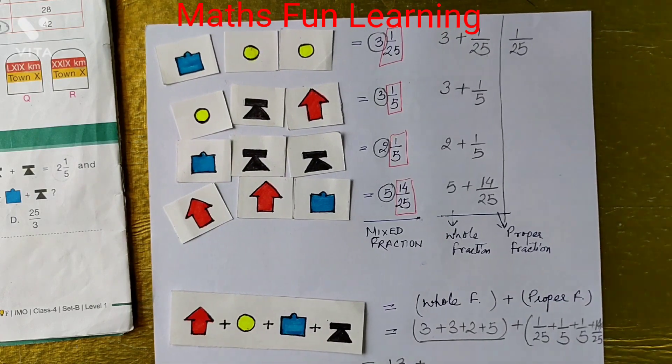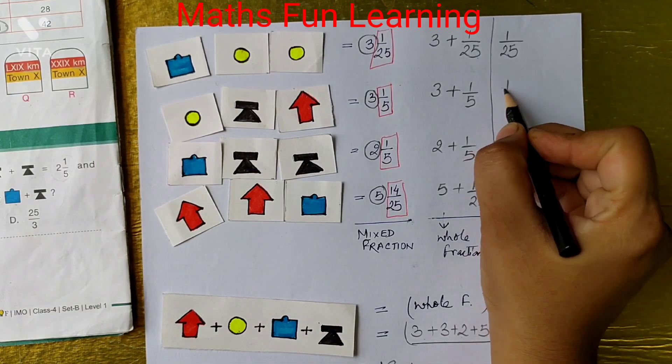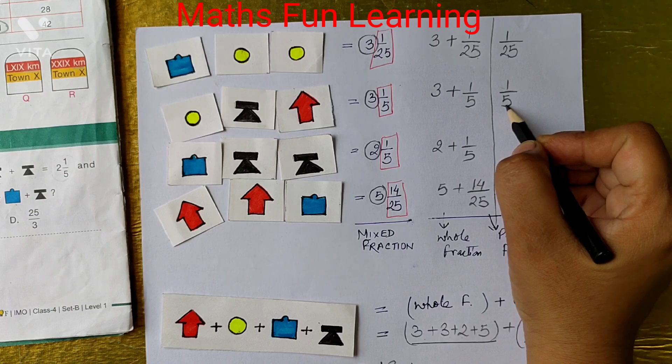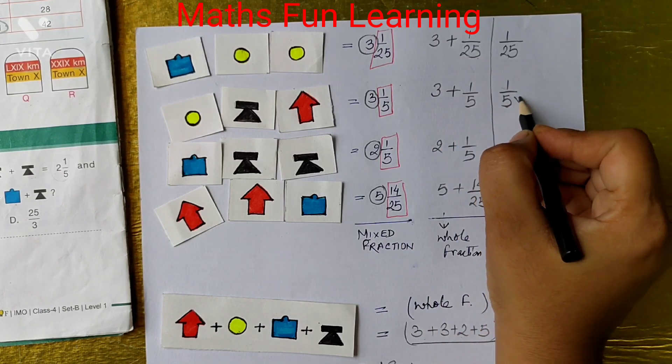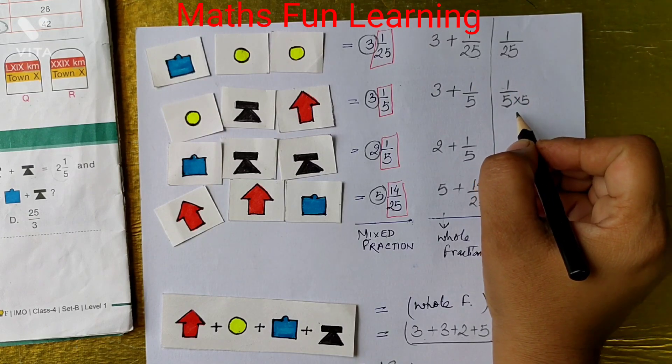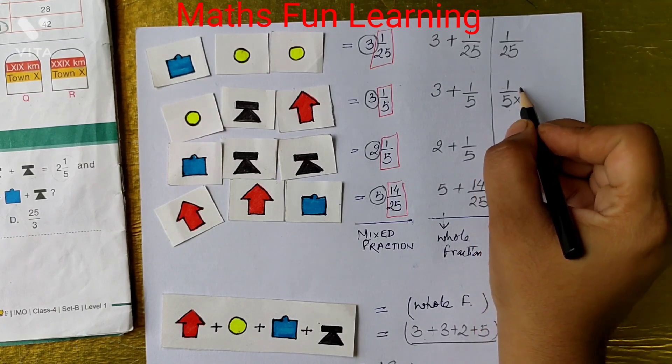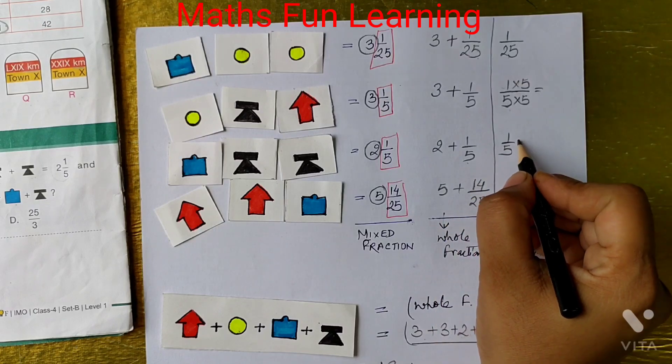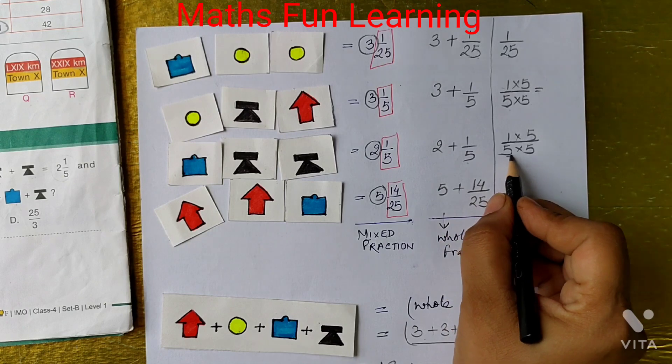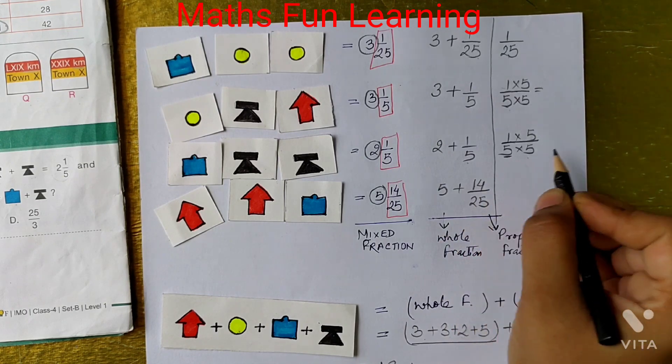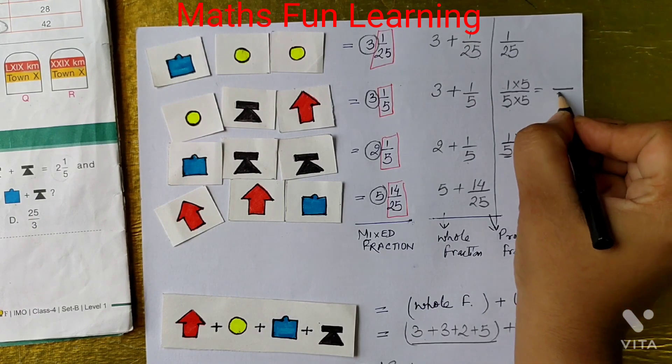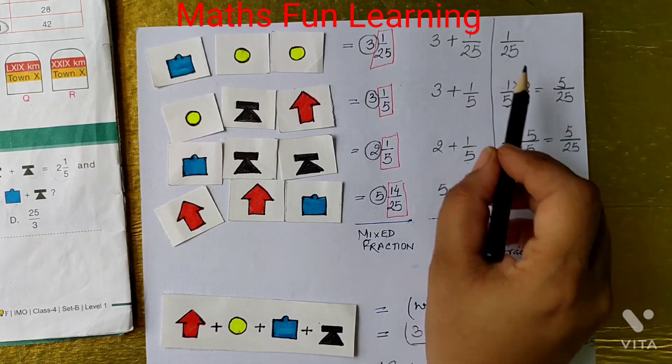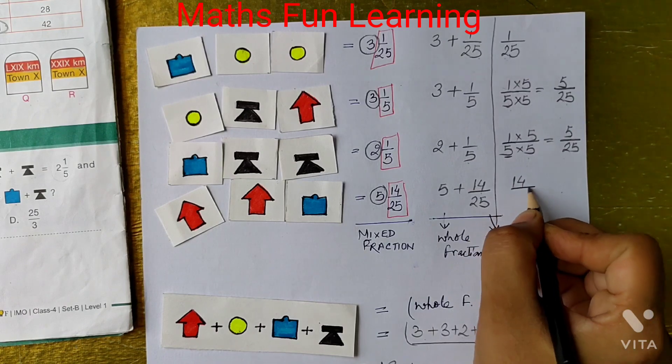So I am going to write these like fractions and change these proper fractions into a like fraction. The like fraction means all the denominators should be same. So here 1 by 5 is there. It is not same like 25. So if you want to change it into a like fraction, which number you are going to multiply here? We are going to multiply 5. Yes. So if you multiplied 5 with the denominator, you have to multiply 5 with the numerator as well. That is a rule. Change into the like fraction. 5 is the numerator, 25 is the denominator. And you can observe that this is now changed into the like fraction.